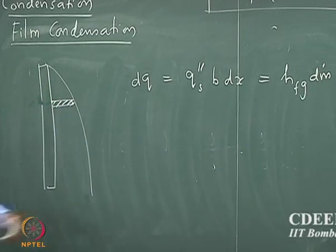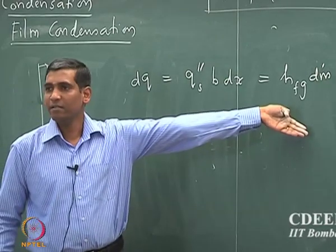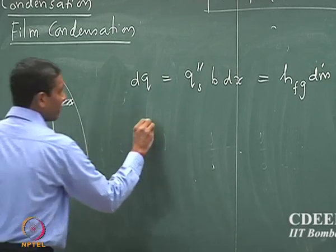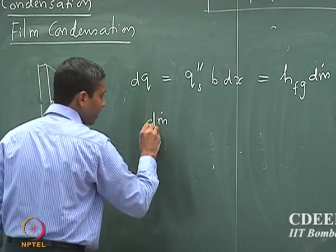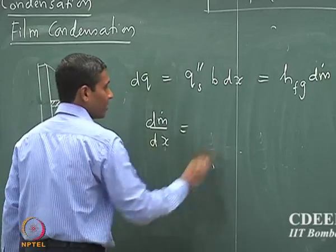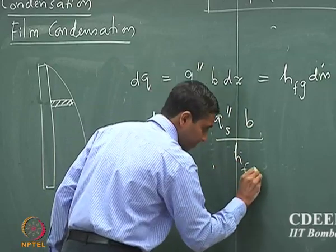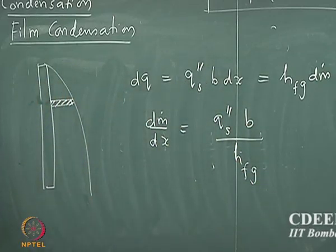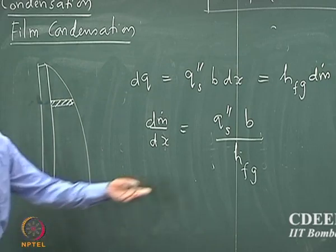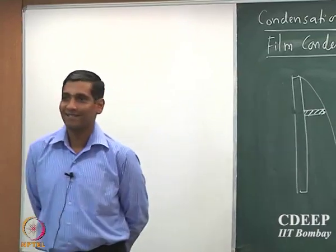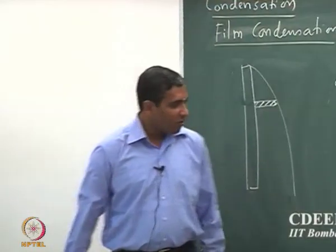This gives me a relationship between the flux and the amount of fluid that is condensing. From here I can find that dm_dot/dx is given by Q_s times b divided by h_fg. What is Q_s double prime and how do we find that? Well, it is really not a chicken-and-egg problem.